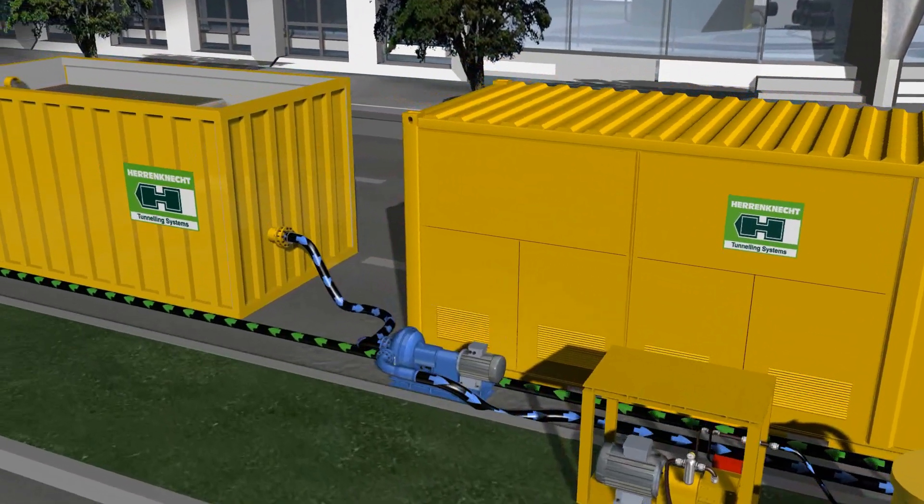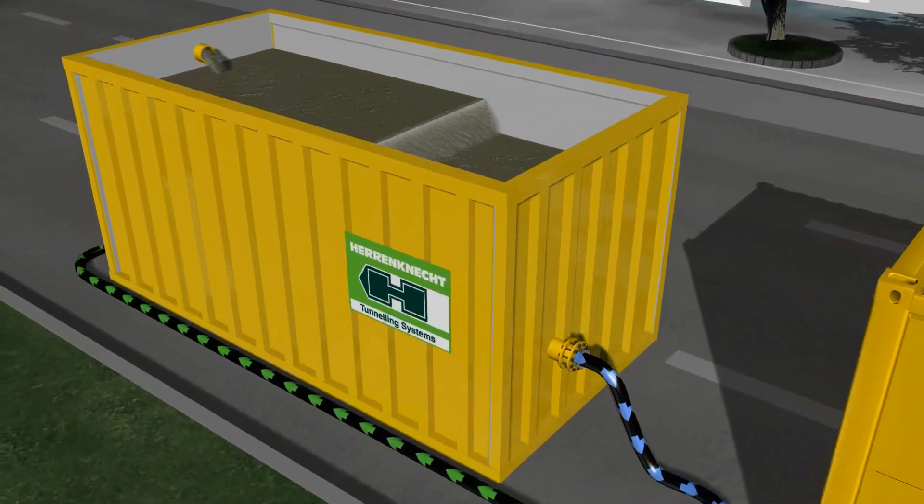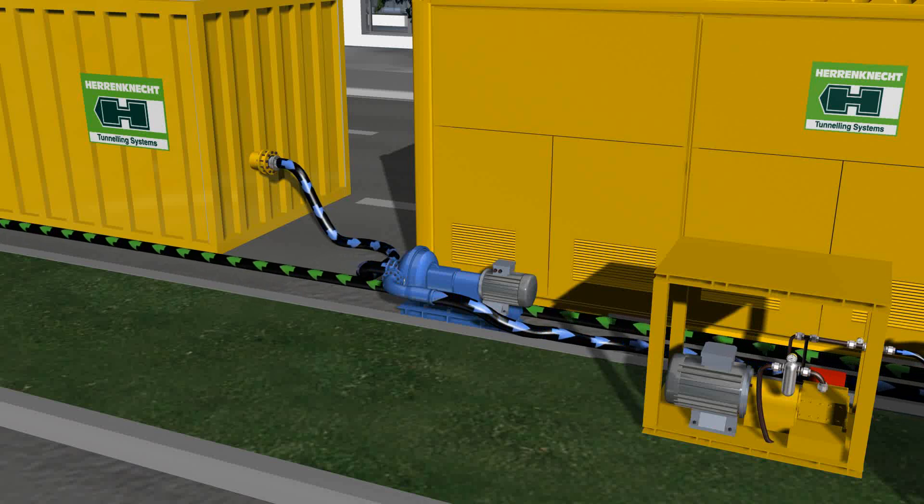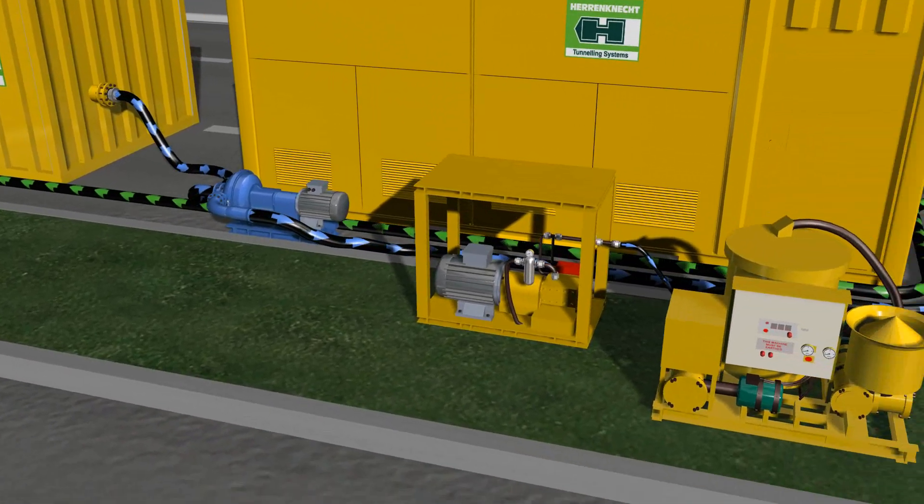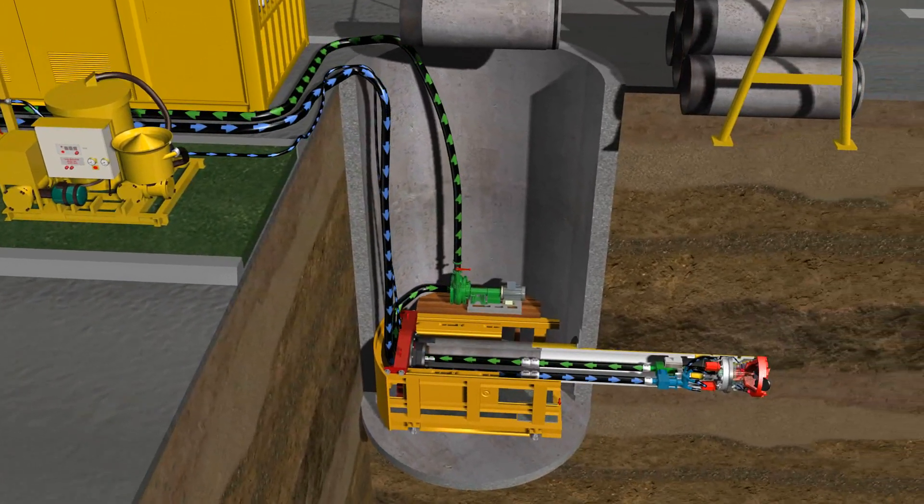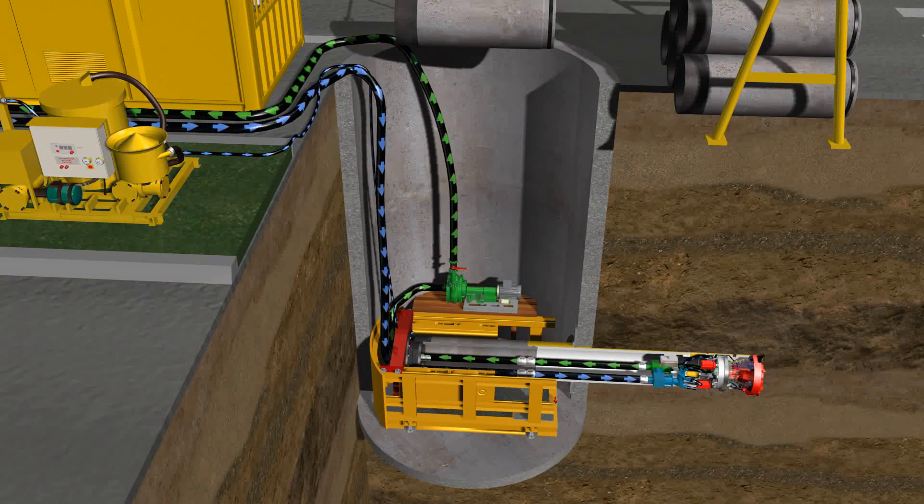The separation plant consists of two chambers. At first, the excavated material is pumped into the back chamber where it settles due to gravity. The overrunning water is filtered and enters in the front chamber from where the clean water is sucked by the slurry feed pump and returned to the slurry circuit, thus creating a closed system.